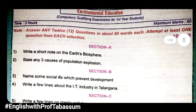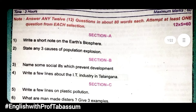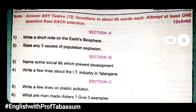This is a model paper I am sharing with you. Answer any 12 questions in about 80 words each. Attempt at least one question from each section. Section A: Write a note on the Earth's biosphere. State any 3 causes of population explosion. From every section you need to attempt one question.